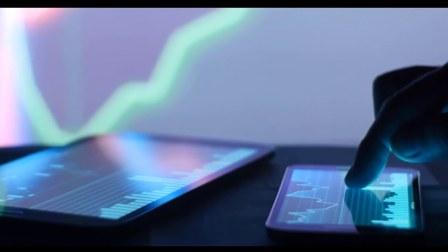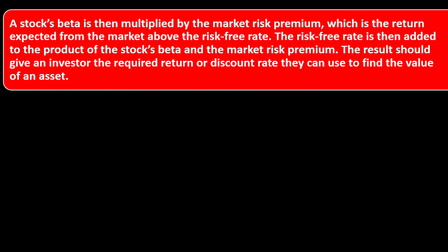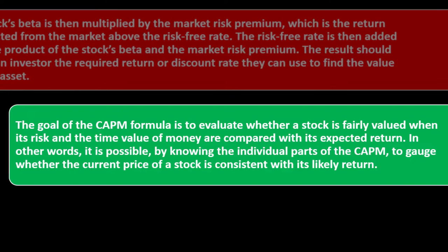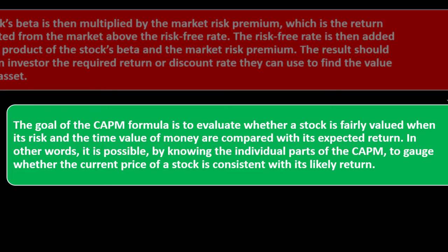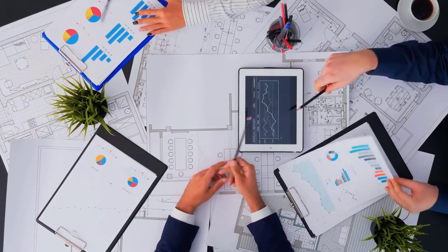We've talked about beta calculation in prior presentations. If a stock is riskier than the market it will have a beta greater than one; if beta is less than one, the formula assumes it will reduce portfolio risk. A stock's beta is multiplied by the market risk premium — the return expected from the market above the risk-free rate — then the risk-free rate is added. The result gives an investor the required return or discount rate to find asset value. The goal of the CAPM formula is to evaluate whether a stock is fairly valued when risk and time value of money are compared with its expected return.